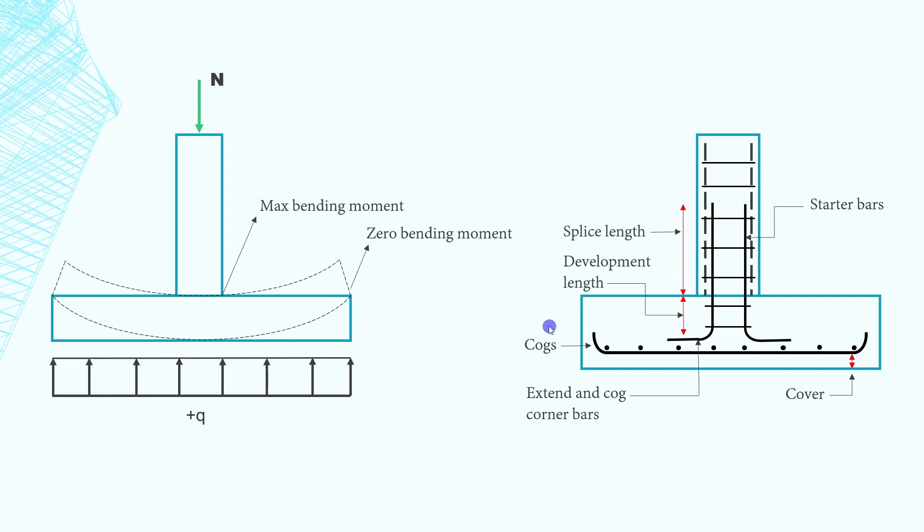If you have a look at the end of some bars you will notice that they've got a bend or cog, and the bars can be cogged to provide better anchorage and also reduce the tensile development length. Last but not least, make sure you provide enough cover to the reinforcement according to the concrete strength and exposure classification.